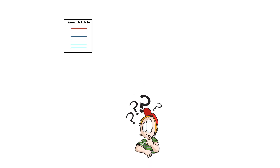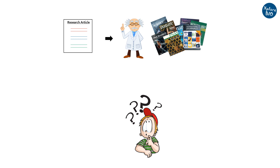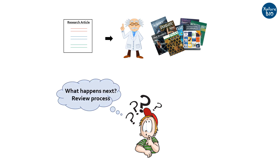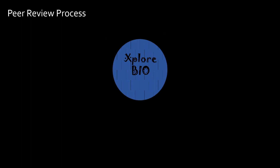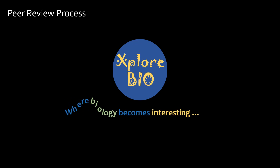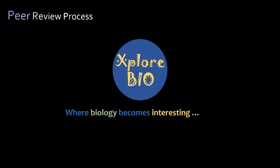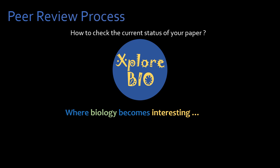If you have ever written a research article and submitted it to a peer-reviewed journal, you might be curious to know what will happen next — what is the whole process and how would you know the status of your paper? In today's video, I will explain what actually happens when you submit a manuscript to a journal, the peer review process, and how to check the current status of your article.